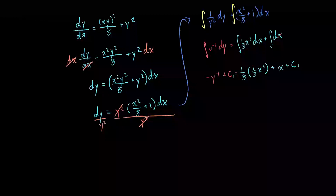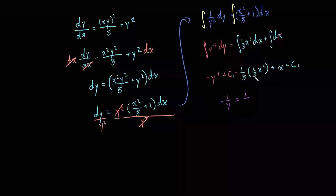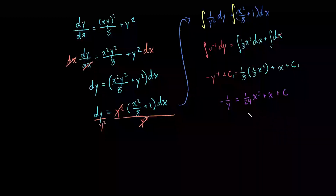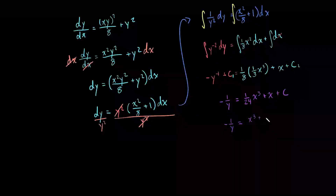From here, we can combine our constants. So we're left with negative 1 over y is equal to 1 over 24 times x to the third plus x plus c. Let's try to get this all over one denominator — we can write it as x to the third plus 24x plus c, all over 24.